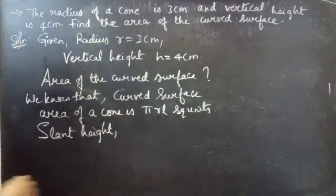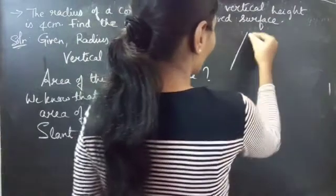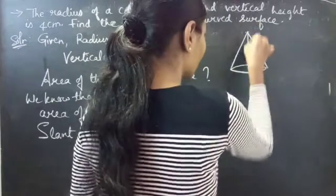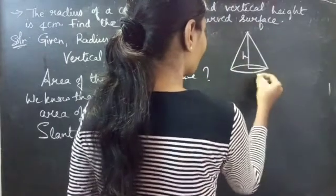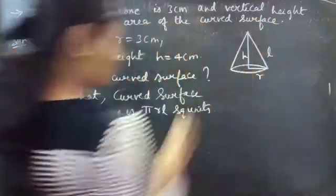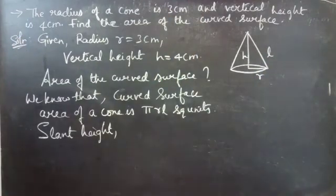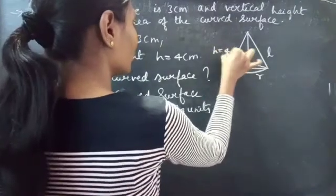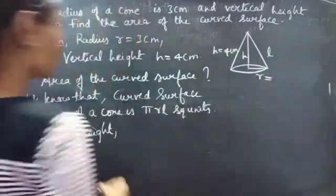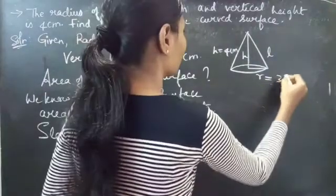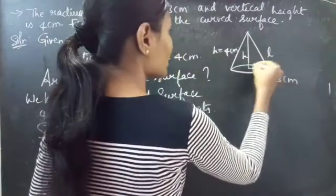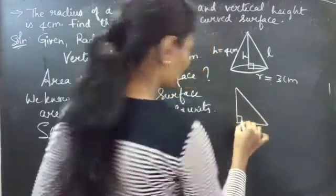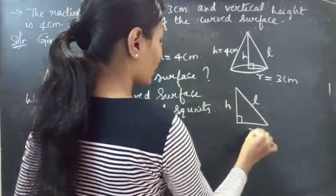Slant height. Let us sketch the cone. We are given h equals 4 centimeters and r equals 3 centimeters. Let us consider the right angle triangle with sides h, l, and r.